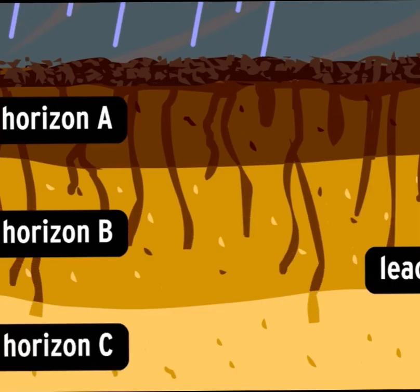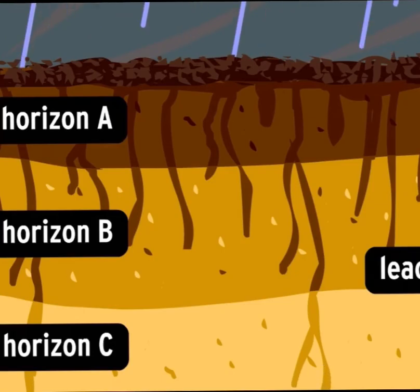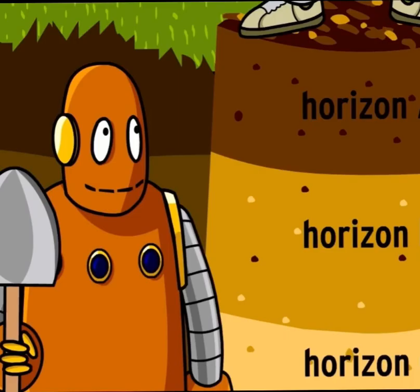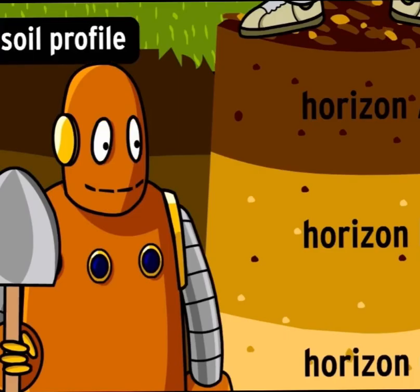The same thing happens in horizon C, which is made up of partially weathered rocks and minerals, as well as leached material from the B horizon. Together, the three horizons form the soil profile.